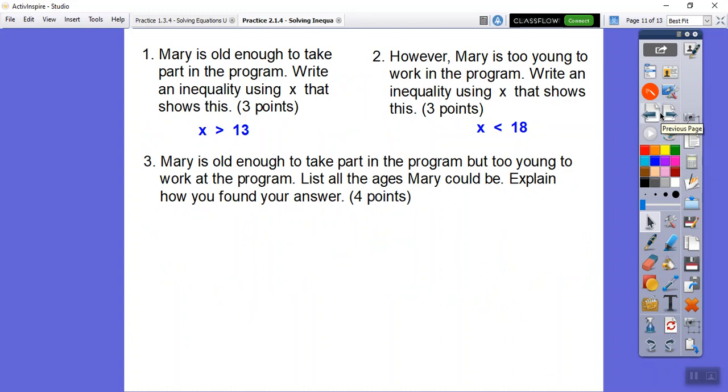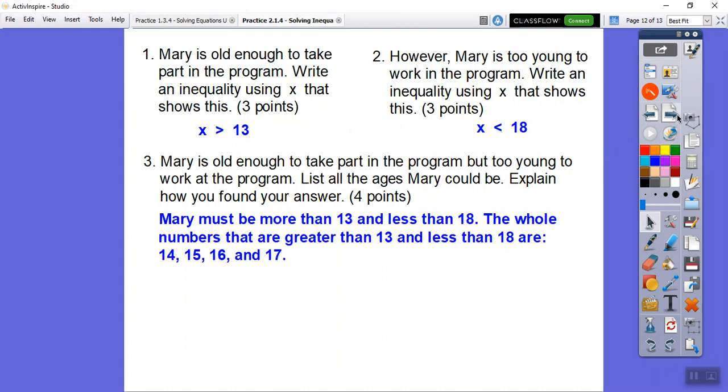Here's number three. Mary is old enough to take part in the program but too young to work at the program. So she's somewhere in between these, and it says list all ages Mary could be and explain how we found the answer. So Mary must be more than 13 and less than 18. The whole numbers that are greater than 13 and less than 18 are 14, 15, 16, and 17. We can't choose 18 because she's not old enough. So Mary could be 14, 15, 16, or 17 years old.